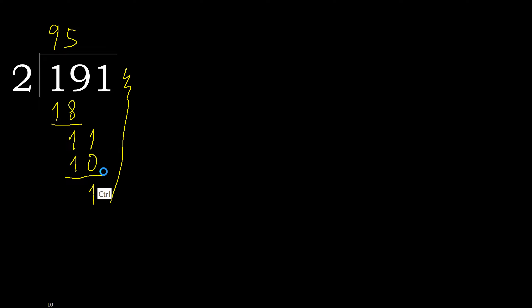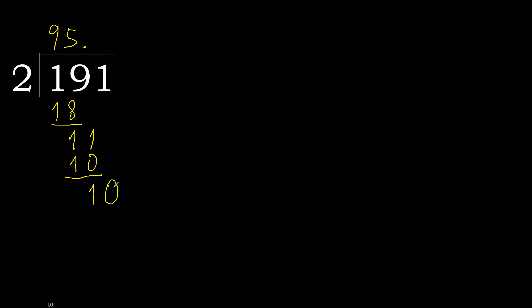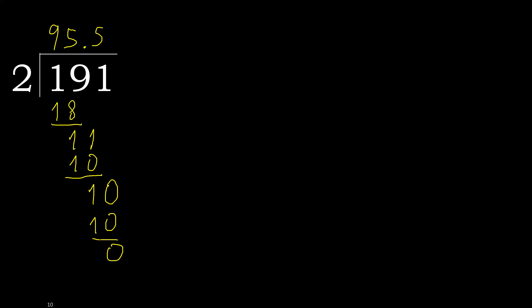That is not a number, therefore complete. Always complete with 0 here with point. Complete. Point. 10. 2 multiplied by 5 is 10. OK. Subtract: 0. 0, therefore finish.